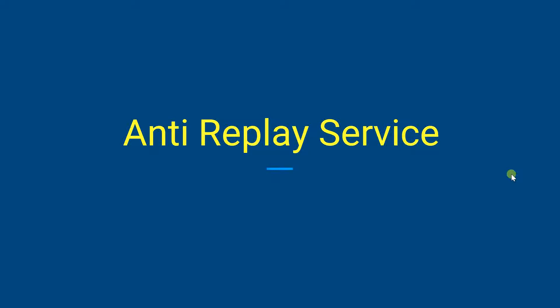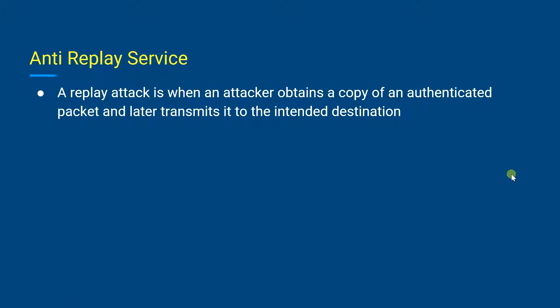Before going into the anti-replay service, we need to understand what a replay attack is. A replay attack is one in which an attacker will obtain a copy of an authenticated packet and will later transmit it to the intended destination. The recipient of the duplicate authenticated IP packets may disrupt the service in some way or may have some other undesired consequence. The sequence number field is designed to prevent such attacks.